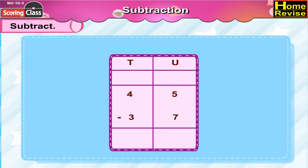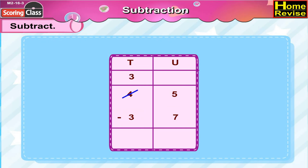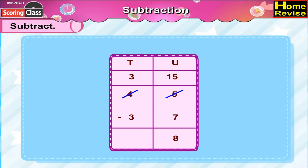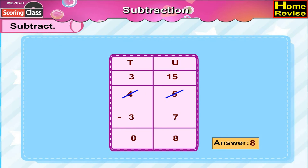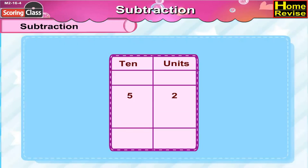45 minus 37 — that is 4 tenths 5 units minus 3 tenths 7 units. 4 tenths becomes 3 tenths and 5 units becomes 15 units. 15 minus 7 is 8, and 3 minus 3 is 0, so 45 minus 37 is 8.